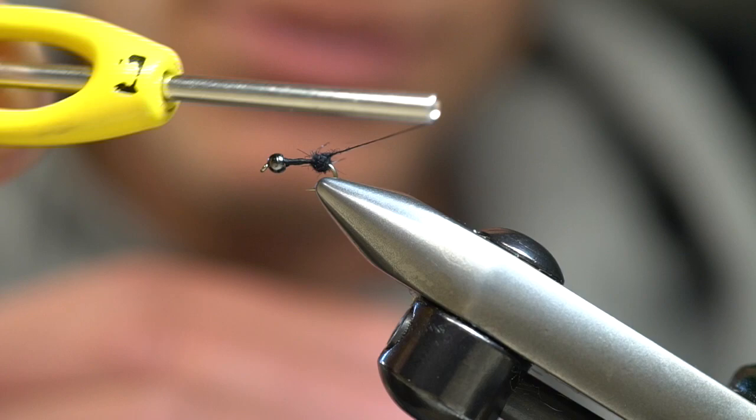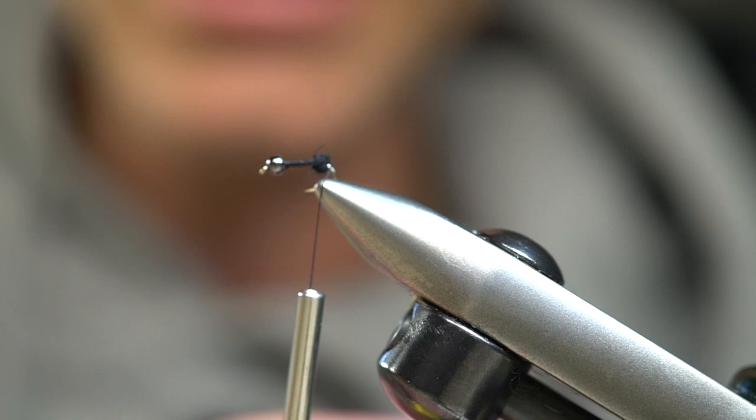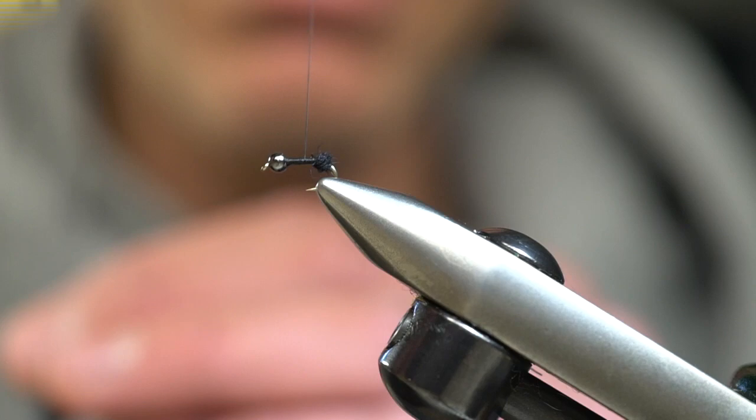Maintain, the key with this is just slight tension, not too much. Going around and once we create the ball of dubbing, just go around several times securing that thread. You can slide that thread and really kind of bunch that ball together, really locking that into place.